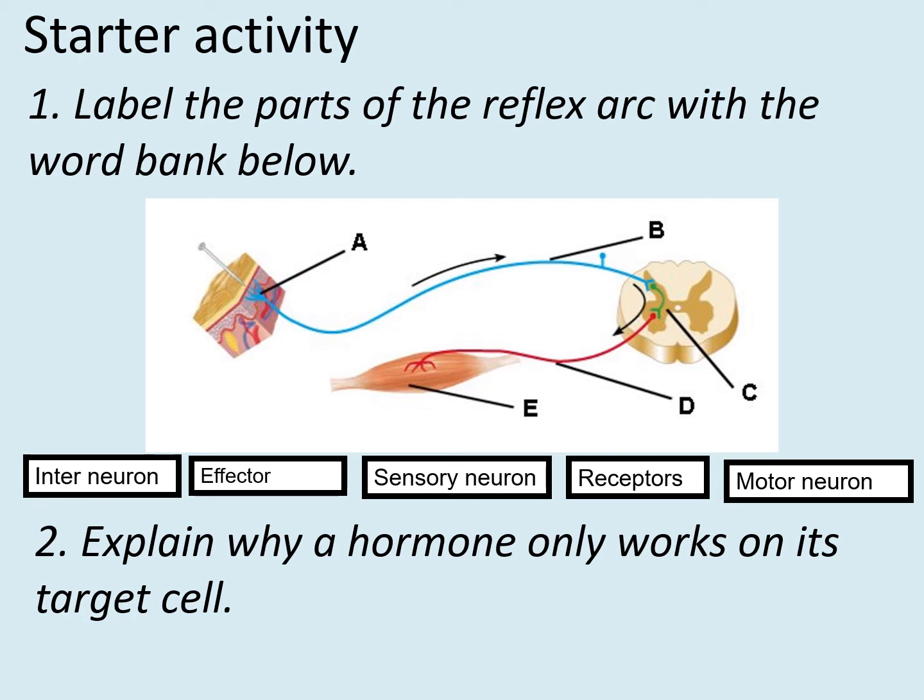Hello everyone and welcome to video tutorial 18. You should now know all about the nervous system and hormones and you should be able to pause the video and answer the questions. You need to try to label the parts of the reflex arc with the word bank below and explain why a hormone only works on its target cell. Pause the video and try to answer the questions before I go over the answers.